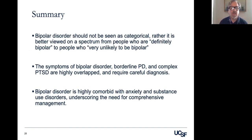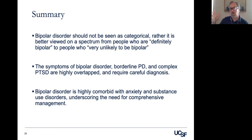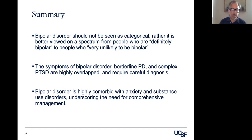In summary, think of this not as a single yes-or-no category, but rather as a spectrum from people who are definitely bipolar to people who are very unlikely to be bipolar. Think about ruling out — or at least keeping an open mind about — possible comorbidities like complex trauma and borderline personality disorder, and bear in mind that many people with bipolar disorder also have problems with substance abuse and anxiety. Thank you for your attention.